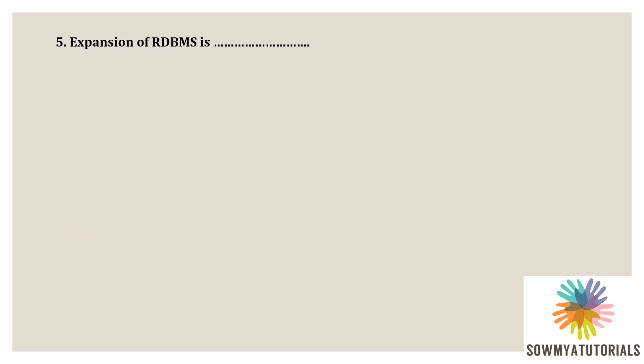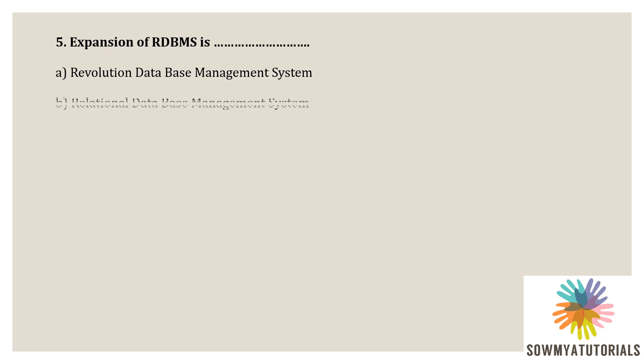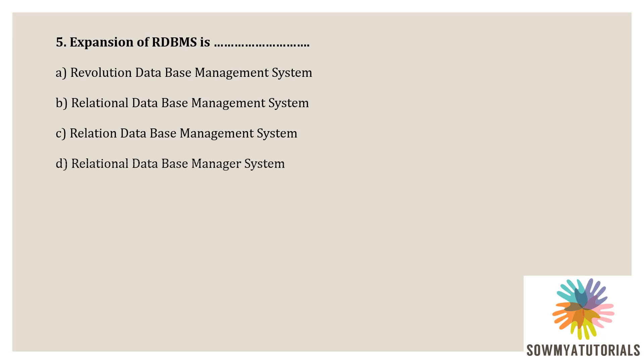Next question: the expansion of RDBMS is — options include revolution database management system, relational database management system, relation database management system, and relational database manager system. The correct option is B — Relational Database Management System.